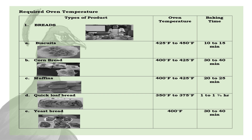Types of products — Number 1: Piece of bread, with different kinds. A. Biscuits: 425 to 450 degrees Fahrenheit, baking time 10 to 15 minutes. B. Corn bread: 400 to 425 degrees Fahrenheit, baking time 30 to 40 minutes. C. Muffins: 400 to 425 degrees Fahrenheit, baking time 20 to 25 minutes. D. Quick loaf bread: 350 to 375 degrees Fahrenheit, baking time 1 to 1¼ hours.